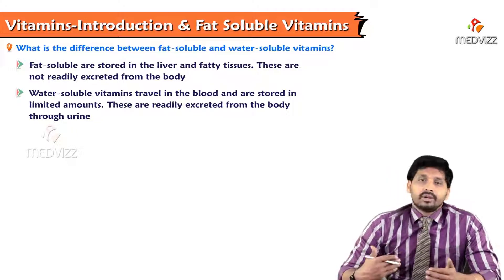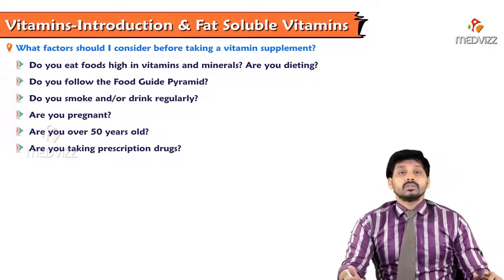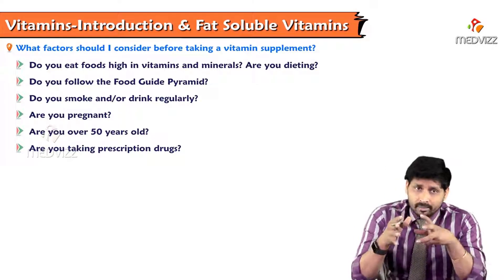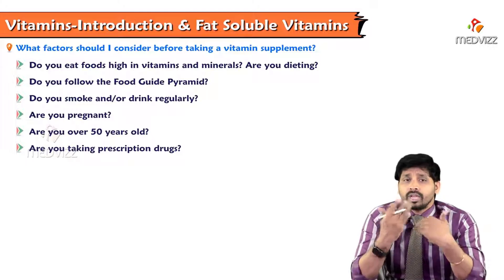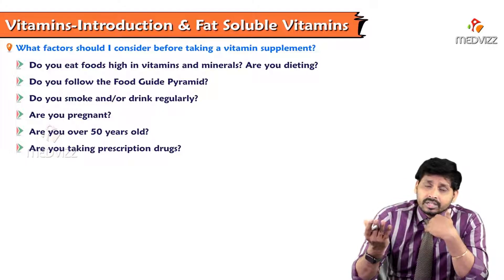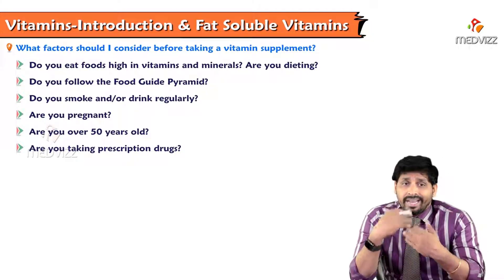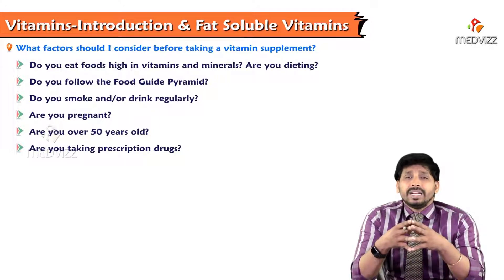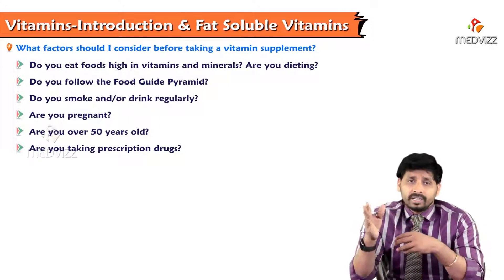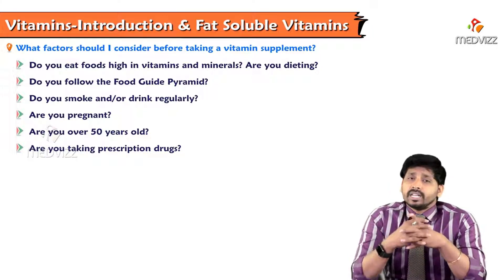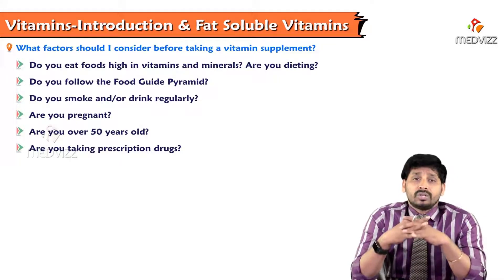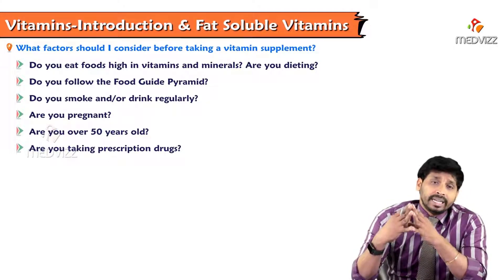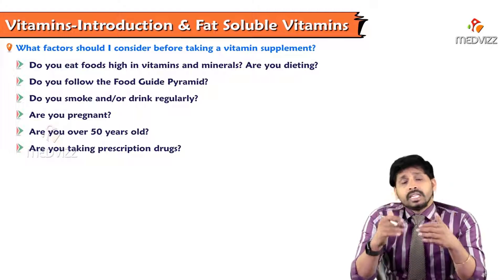Factors to consider before taking a vitamin supplement: Do you eat foods high in vitamins and minerals? Are you dieting or following the food guide pyramid? Do you smoke or drink regularly? What type of food are you eating? Conditions like pregnancy, lactation, and aging also matter, as does taking antibiotics. For example, if you are smoking, more free radicals are produced, so you should include vitamins E, C, or beta-carotene in your diet.